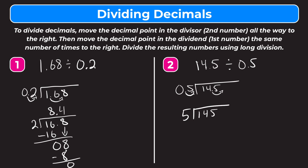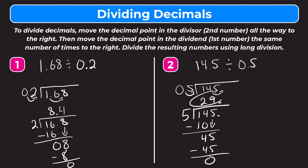Now let's go through our long division problem. How many times does five go into one? It doesn't, so let's move over to the four. How many times does five go into fourteen? Five times two is ten, we can't add another five, so twice. Two times five is ten. Subtract — fourteen minus ten is four. Bring down our five — forty-five. How many times does five go into forty-five? Nine. Nine times five is forty-five. Subtract — zero. The decimal point was all the way over here since we moved it, so we bring it up. This is just a whole number answer: twenty-nine.